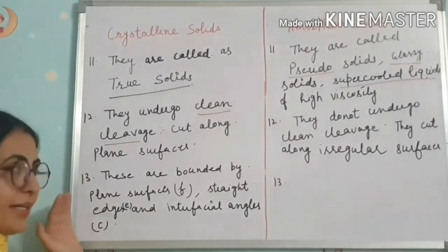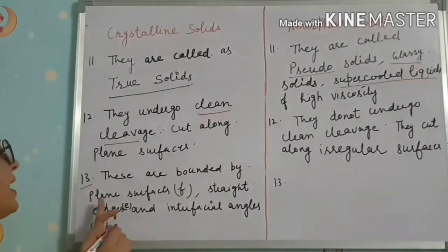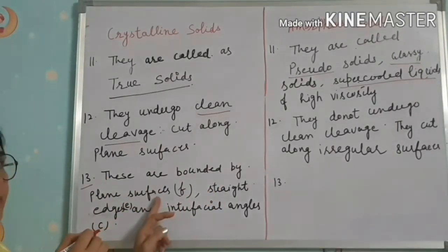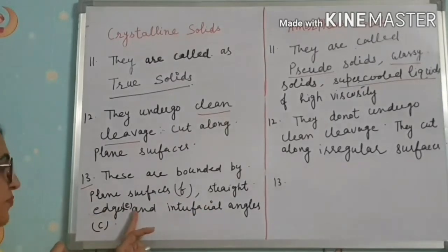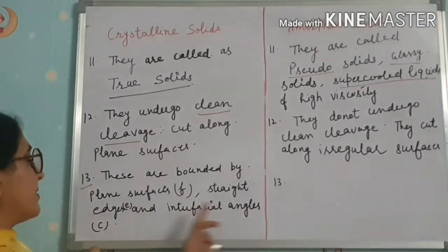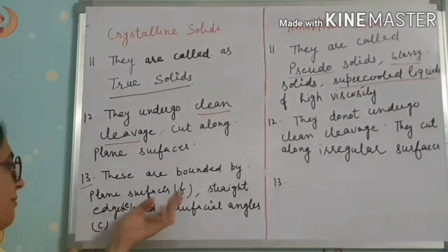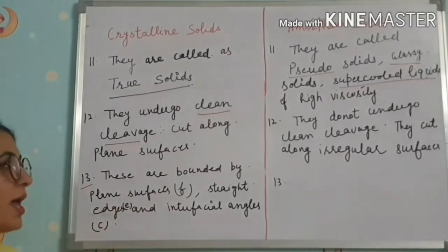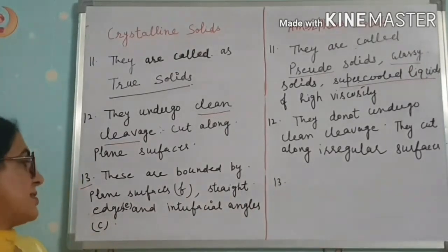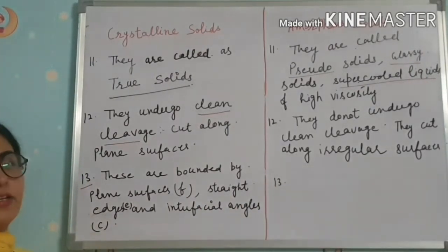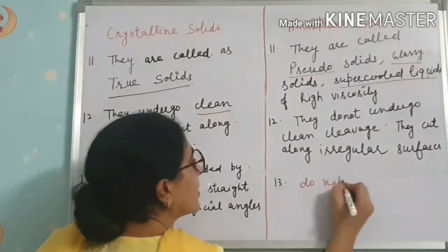The thirteenth point: crystalline solids are bounded by plain surfaces (F), straight edges (E), and interfacial angles (C), satisfying the relation F plus C equals E plus 2. Amorphous solids are not bounded by plain surfaces, straight edges, or interfacial angles.